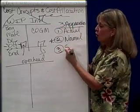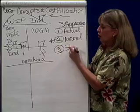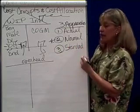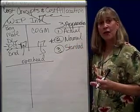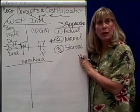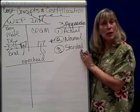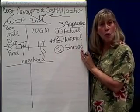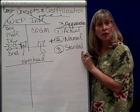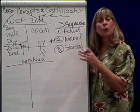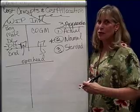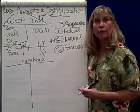The third way to approach costs in work in process is called standard costing. Standard costing is a very good tool for evaluating performance. Later in the course, we're going to look at standard costing as a performance evaluation tool as a manager.